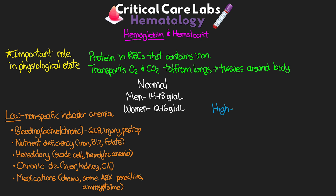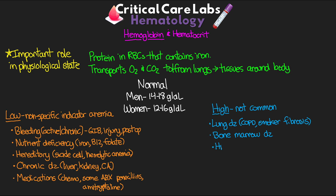While we can see high hemoglobin levels, it's really not common to come across this. Cases where we do see this are typically in our patients with lung disease such as COPD or smokers who have fibrosis, bone marrow disease, high altitudes because our body is trying to compensate for decreased atmospheric oxygen, and medications such as ivermectin, hydroxyurea, and interferon.